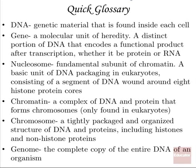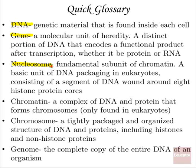Our quick glossary: DNA is our genetic material that we find inside each cell. A gene is our molecular unit of heredity — a piece of DNA that encodes any type of functional product, whether that's a protein or an RNA. A nucleosome is the fundamental subunit of chromatin, the basic unit of DNA packaging in eukaryotes, consisting of DNA wound around a histone octamer.